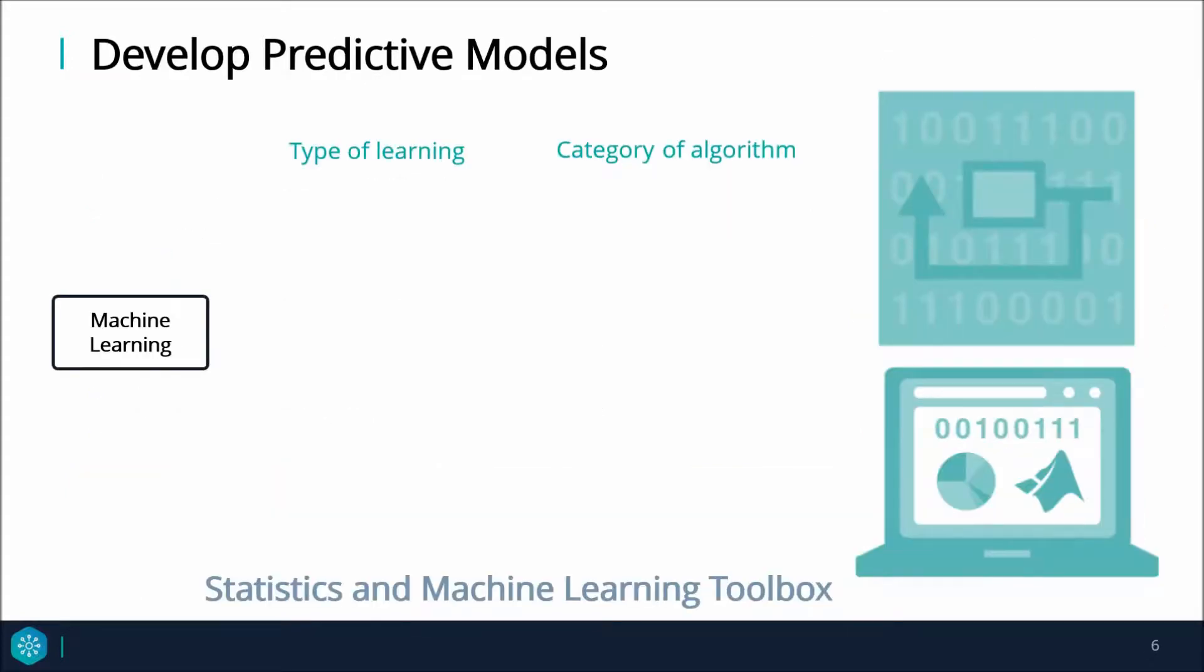Before learning more about the capabilities of MATLAB for predictive modeling, I'm going to give a brief overview into machine learning. Machine learning can be split into two main types of learning. You can use unsupervised learning for when you have input data but do not know the outcomes of your data points. You can create clustering algorithms to make sense of your data and make inferences based on the relative positions of your data points.